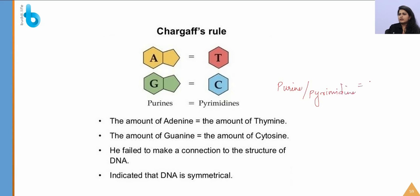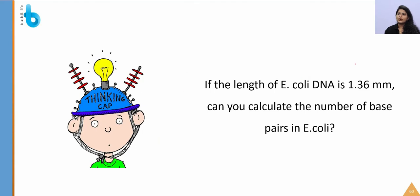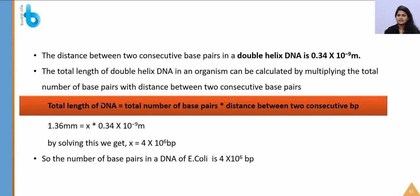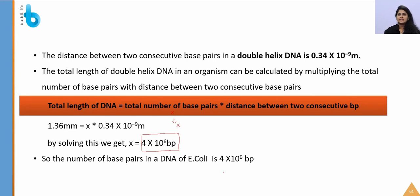To calculate base pairs in E. coli: the length of DNA is 1.36 mm. Using the formula — total length = total number of base pairs × distance between consecutive base pairs (0.34 × 10⁻⁹ m) — we get 1.36 × 10⁻³ = x × 0.34 × 10⁻⁹, solving to x = 4 × 10⁶ base pairs.